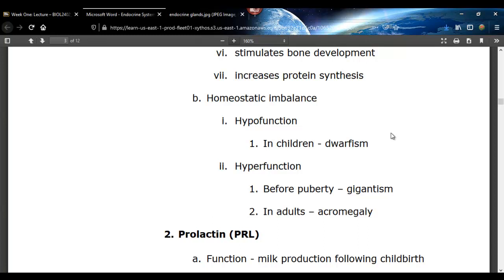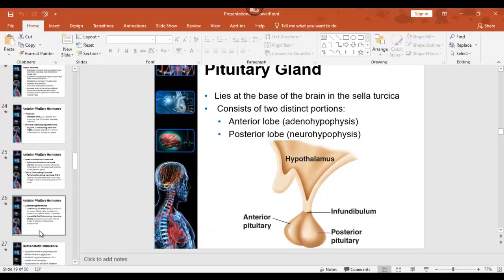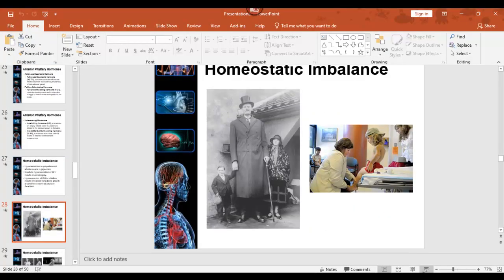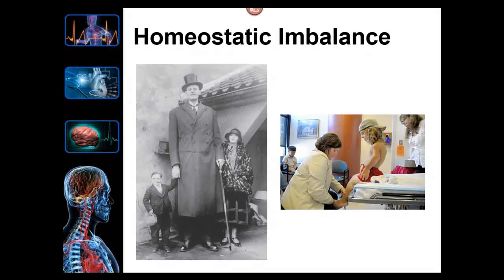Hypofunction — in other words, a person doesn't have enough growth hormone — causes dwarfism. Bones ossify too early, because growth hormone is one of those hormones that keeps what's called the epiphyseal discs — the growth plates in the ends of long bones — cartilaginous. You don't have enough, it causes dwarfism.